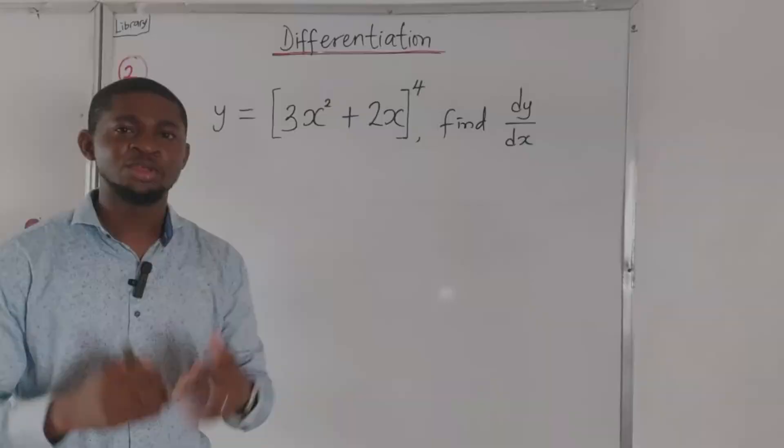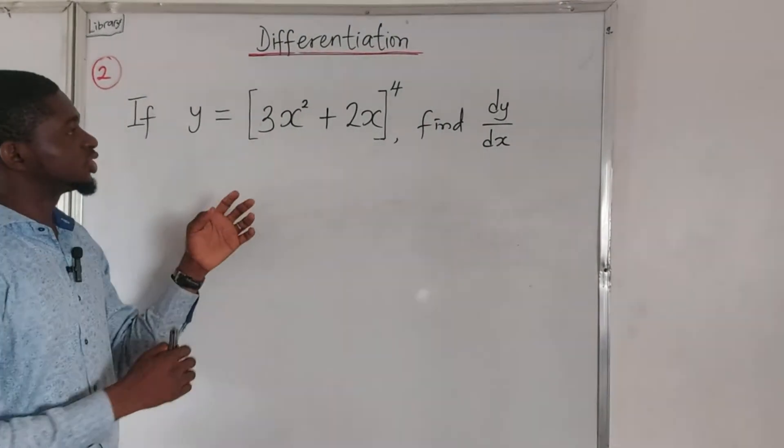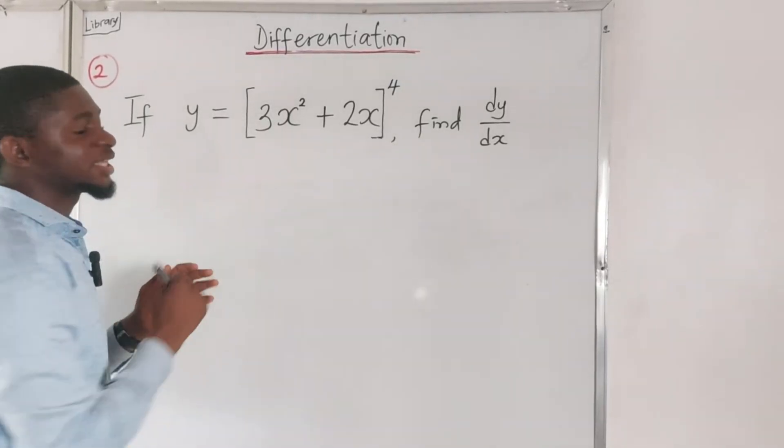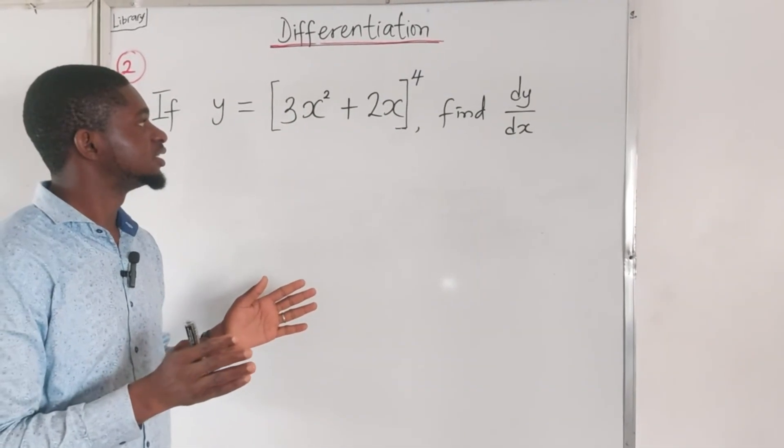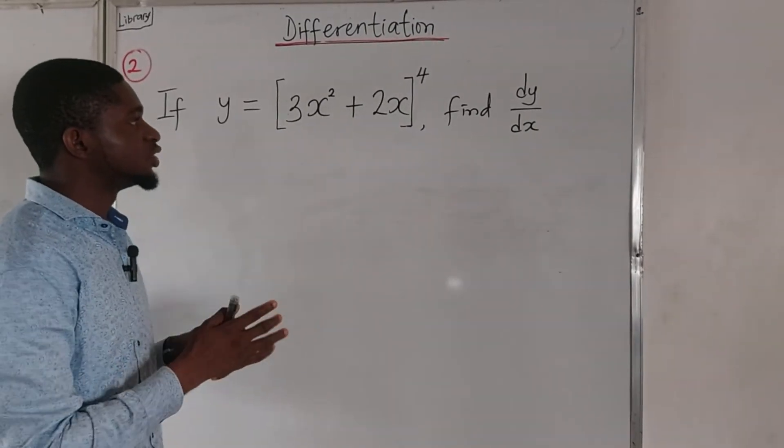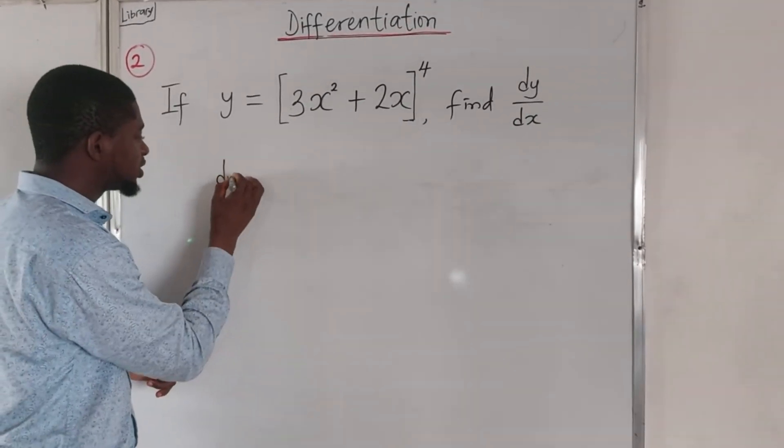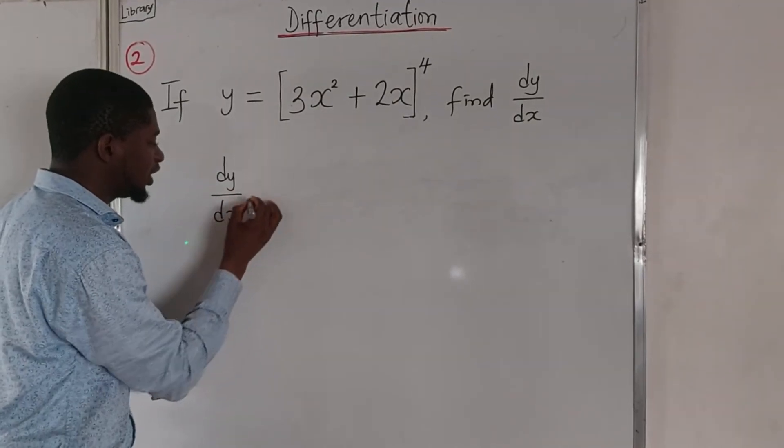So as a JAMB student, you come across this question to be attempted under 60 seconds. How do we go about it? Just like we learned earlier to do this the quick way, dy/dx equals...